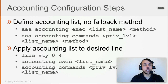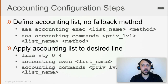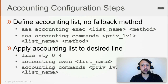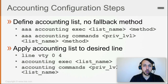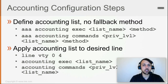Now that you've followed the AAA model with its three entities — and the authentication, authorization, and accounting options — all of these commands actually make sense. As you progress in your career, if you pay attention to how technology works and what the scope of AAA is, what the building blocks are, what you can do and why, then when you look at the configuration options, the commands make sense.